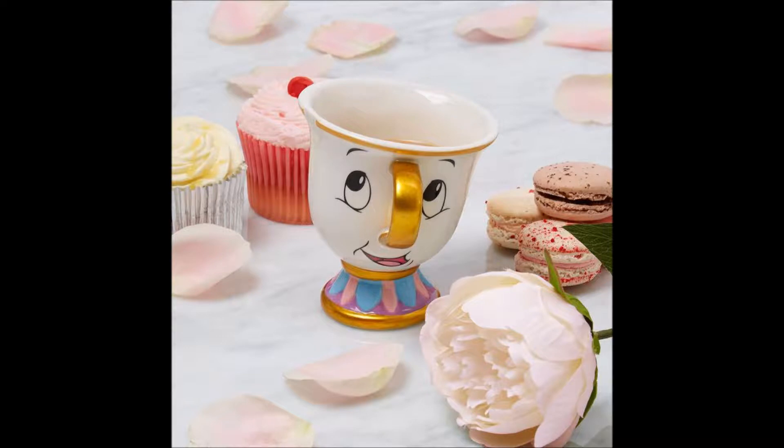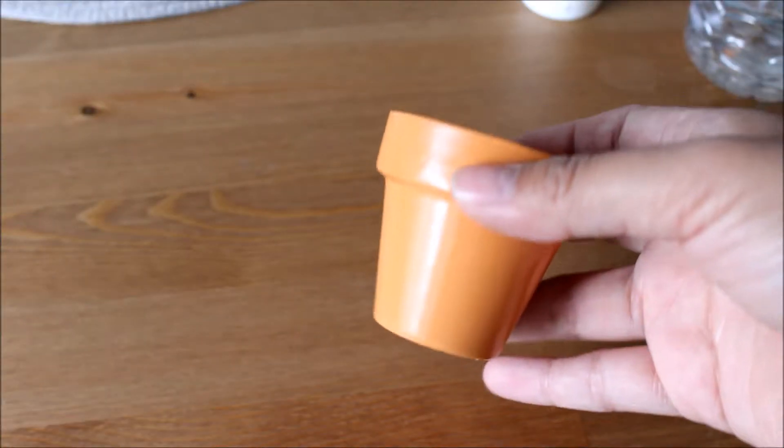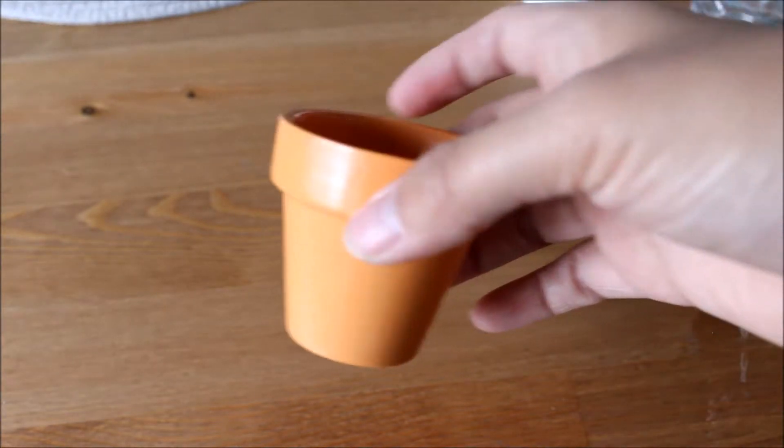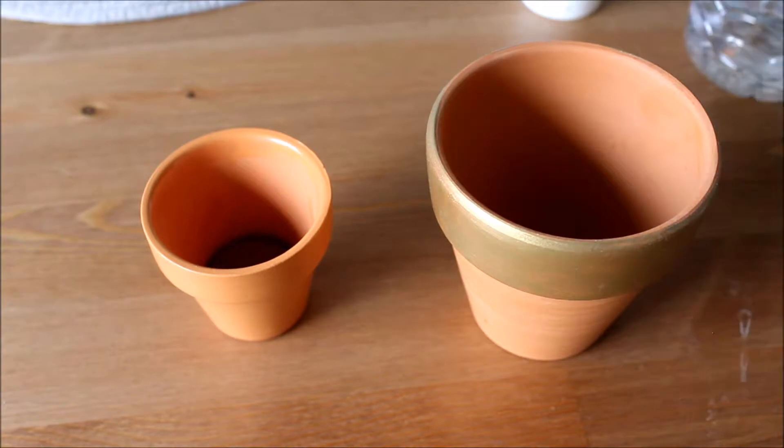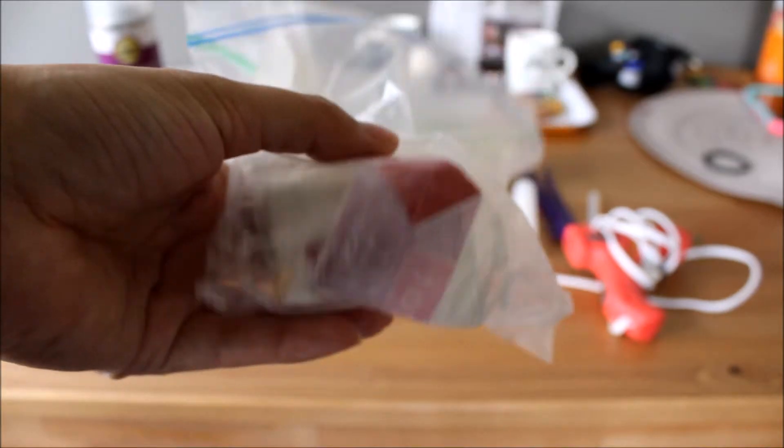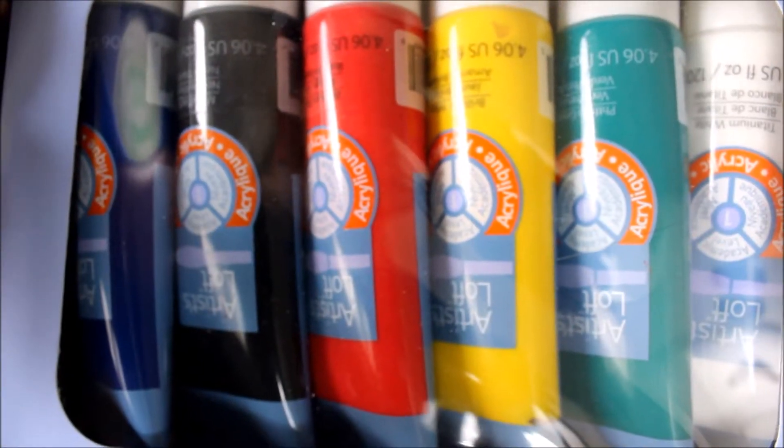Here are a few materials that you will need to have: a miniature flower pot, any size actually doesn't matter. You could either use a small one or a medium. It just really depends on what size you want your Chip from Beauty and the Beast to come out. You're going to be needing some clay. I have some leftover clay from my last project, some acrylic paints.